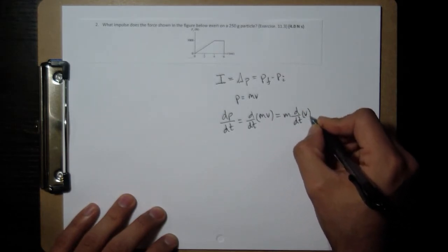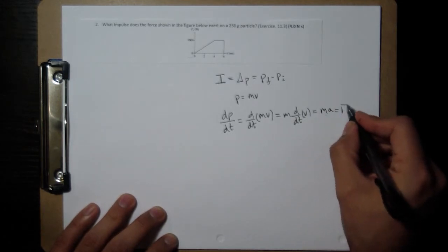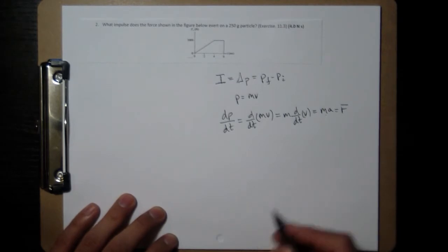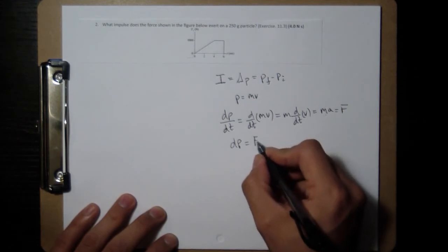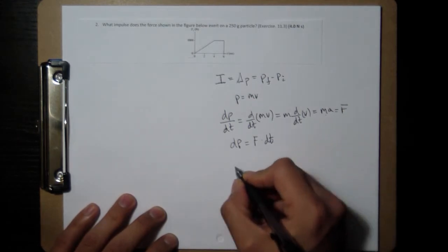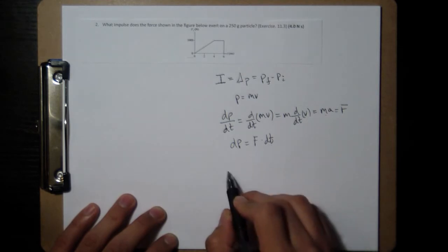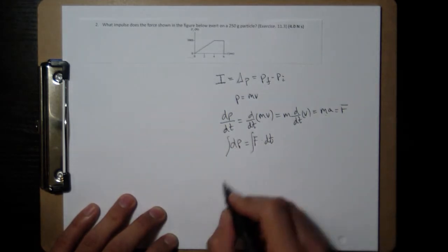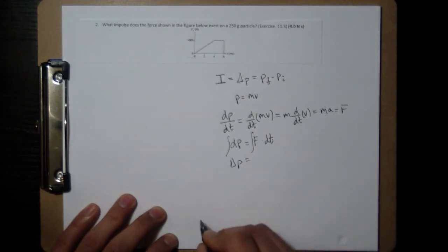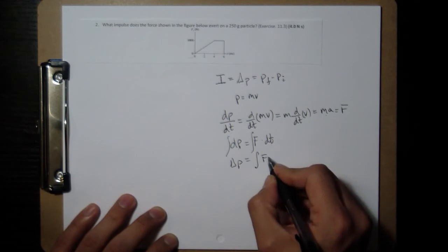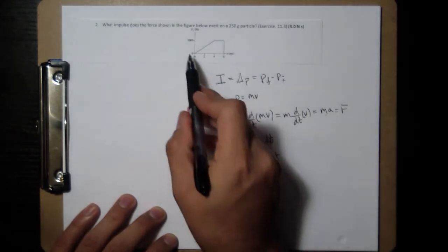The derivative of velocity is acceleration, and this, mass times acceleration, is force. And then if we come back, dp, and I move the dt over, then I have a relationship between momentum, force, and time. And integrating over both of these, this is going to turn out to be final minus initial momentum. And this is the area under the curve of the force-time graph.